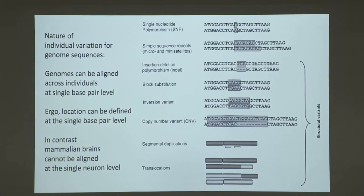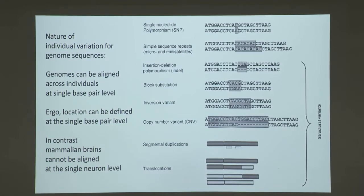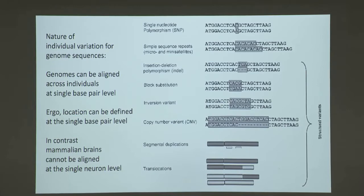Consider individual variation in genome sequences. If we take two individuals and try to line up their genomes, we will succeed — that's remarkable because we look a little different. If you look at the genomes, they don't differ by a whole lot: one base pair in a thousand on average will differ. You can match them up and look at those differences. There are also larger-scale differences — brains are very different. If you take two brains, you can't really align them the way you can align genomes.